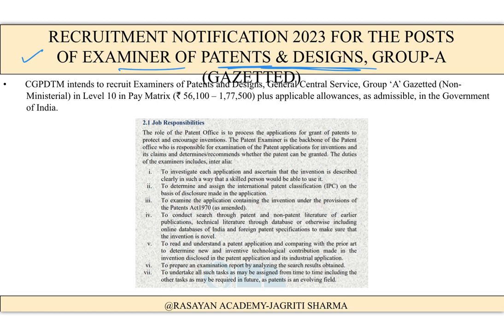The CGPDTM intends to recruit Examiners of Patents and Design — General Central Service, Group A, Gazetted, Non-Ministerial — at Level 10, for which the pay matrix is going to be between 56,100 to 1,77,500, plus applicable allowances as admissible in the Government of India.